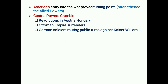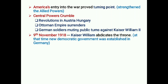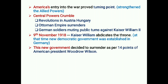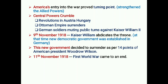Central Powers began to crumble: Revolution broke out in Austria-Hungary, the Ottoman Empire surrendered, and German soldiers mutinied. The public turned against Kaiser Wilhelm II. On 9 November 1918, Kaiser Wilhelm abdicated the throne and a new democratic government was established in Germany. This new government decided to surrender as per the 14 Points of American President Woodrow Wilson. On 11 November 1918, the First World War came to an end.